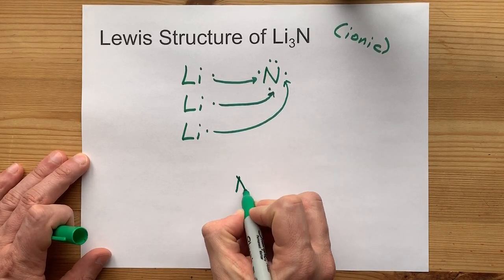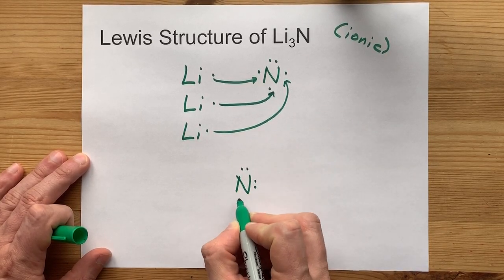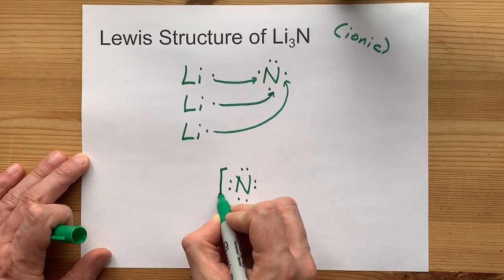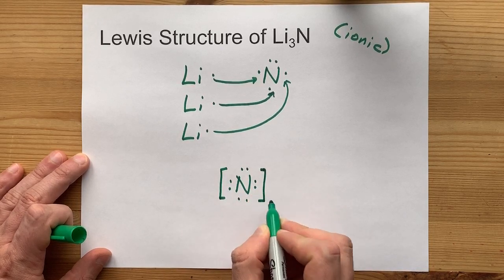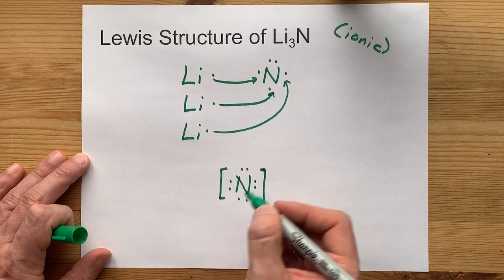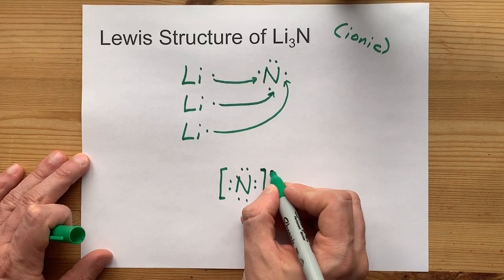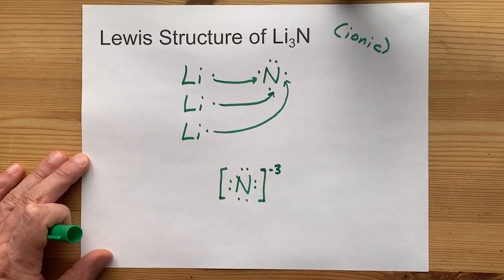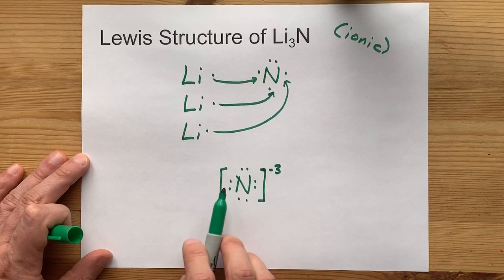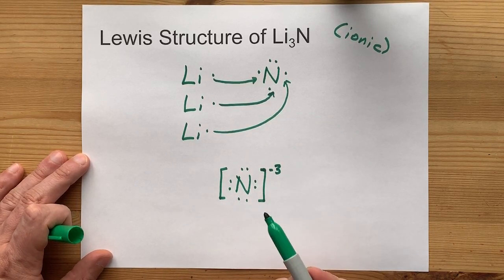To complete our Lewis structure, we're going to draw the N with a full eight electrons around it. That's nice and stable. Full octet. But, three electrons more than it had originally, so it has a minus three charge. The square brackets here indicate that it's an ion with a charge of any kind.